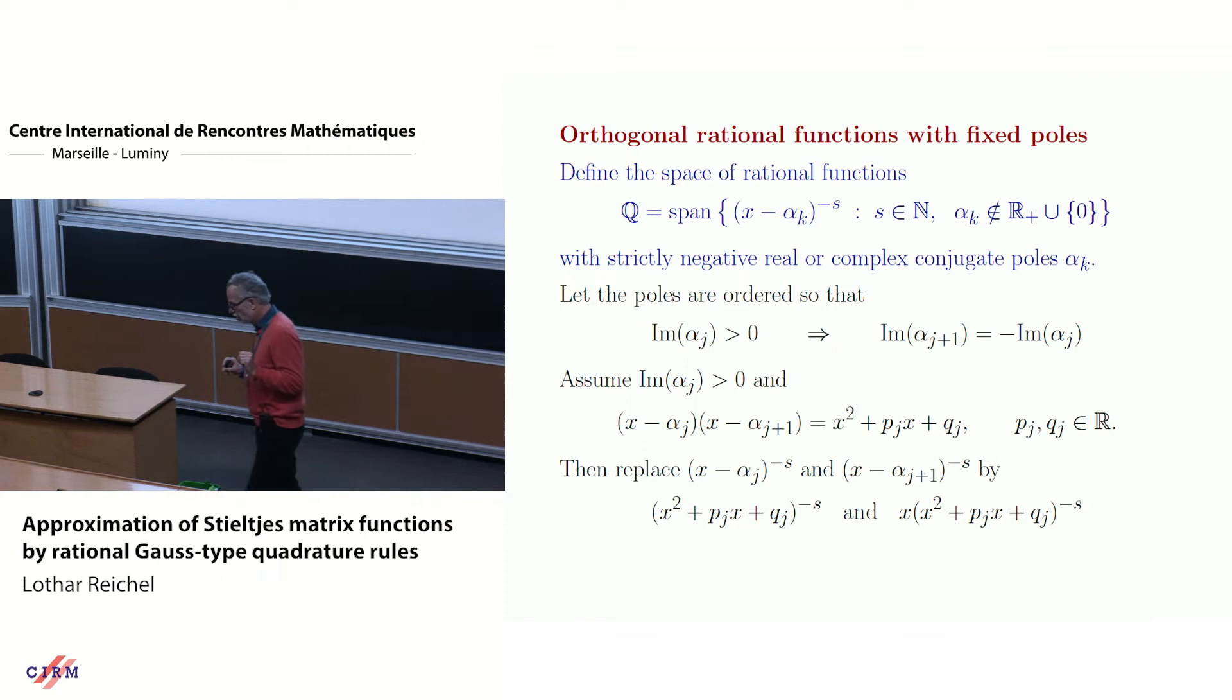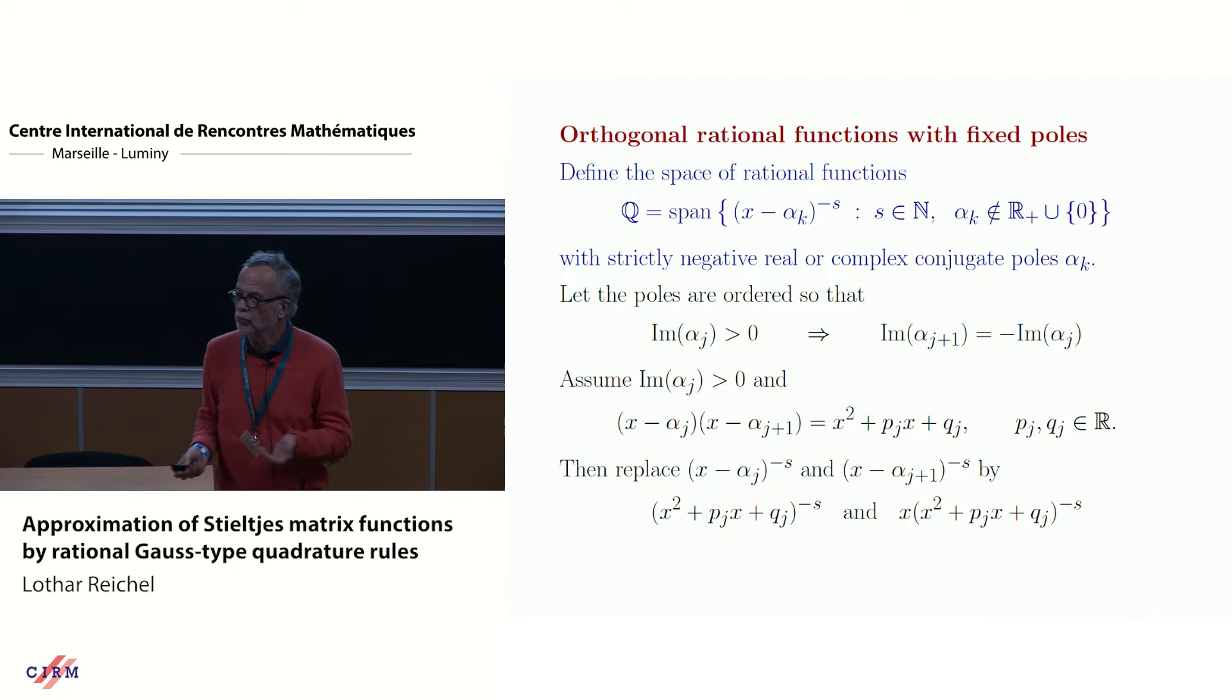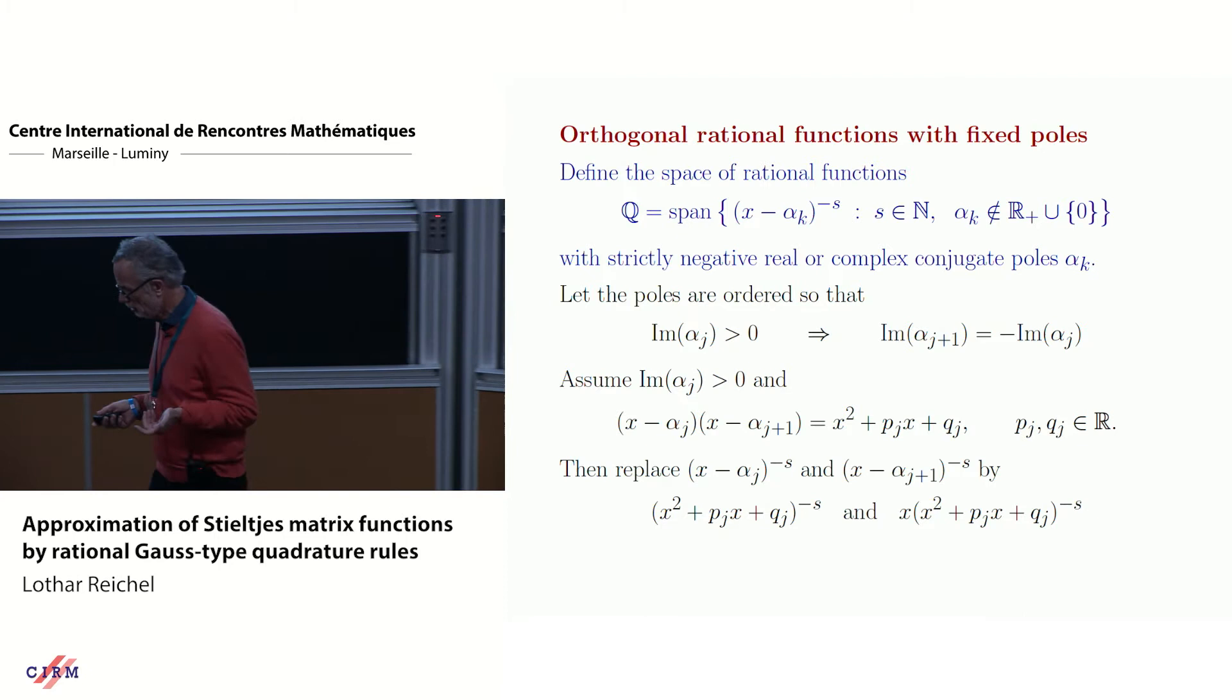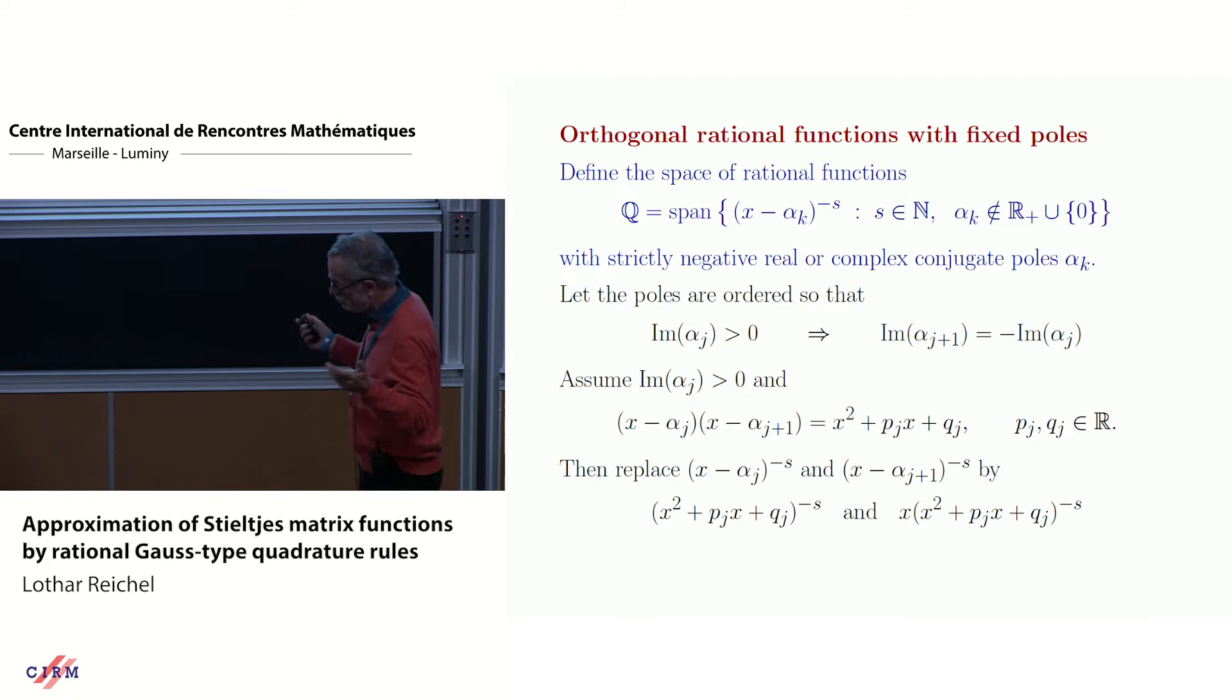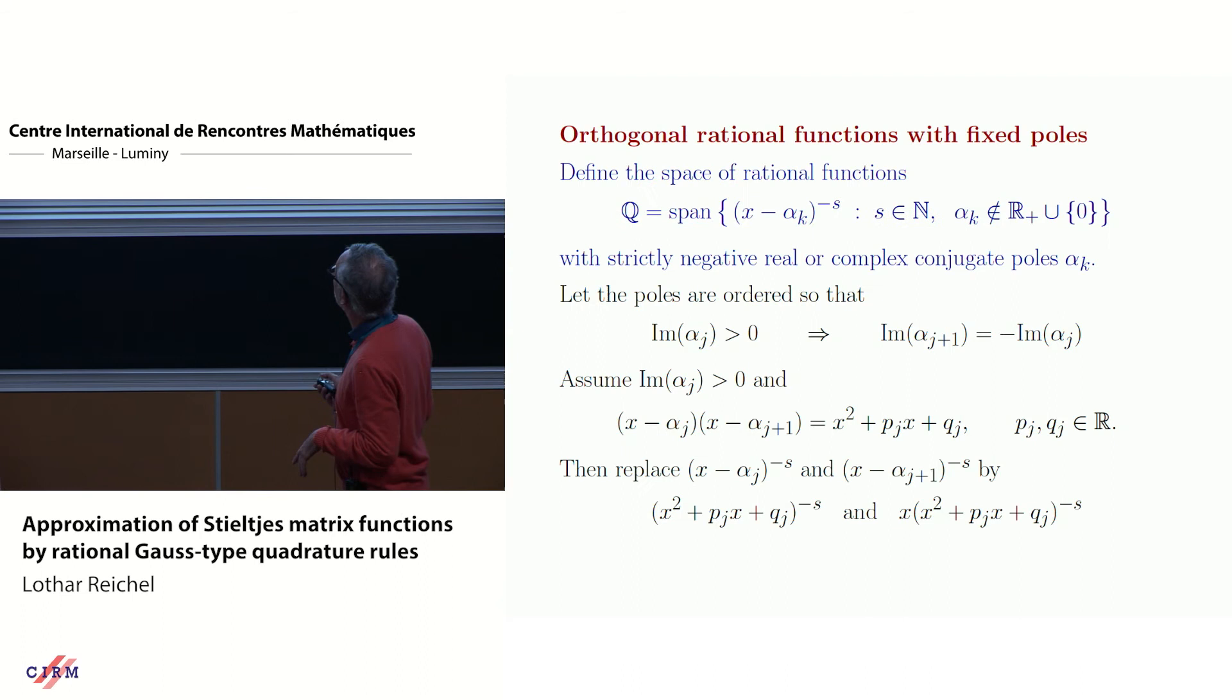So far, so good. Then one says, Stieltjes functions cannot be so well approximated by polynomials. On a small interval, yes, but on a long interval, Stieltjes functions, there we integrate from zero to infinity, so it would be more meaningful to not use a polynomial approximation, but a rational approximation. And so this is what we will do. We will define orthogonal rational functions. And so the alphas, they are the poles, and we can choose them real with strictly negative poles or complex conjugate if we wish.